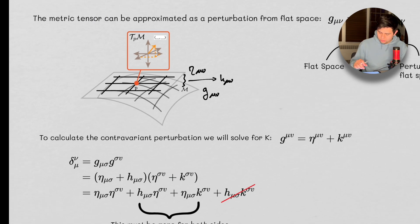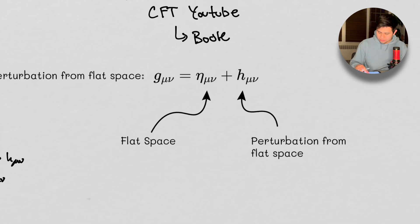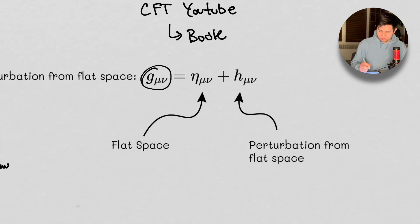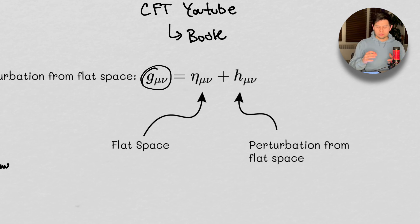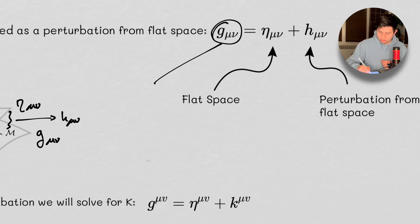The metric tensor — this holds everything we need to know about measuring distances and time at any point in space-time. And this metric tensor — we have the Schwarzschild metric, the Kerr metric, the Reissner-Nordström metric, the Kerr-Newman metric, the Ernst metric, and so forth. There are a lot of metrics. These metrics largely describe what black holes are like, and there are black holes, white holes, wormholes, and all that kind of stuff.